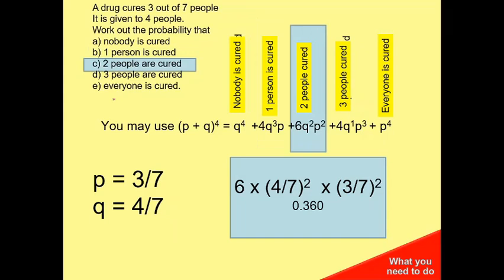I'm doing 6 for two people cured: 6 times (4/7) squared times (3/7) squared, which is 0.360.